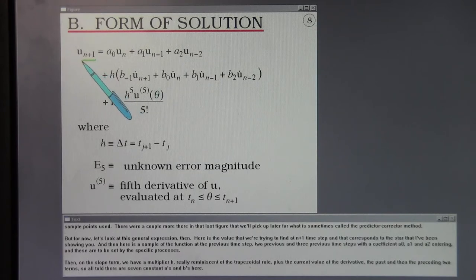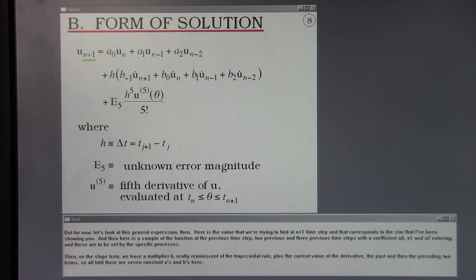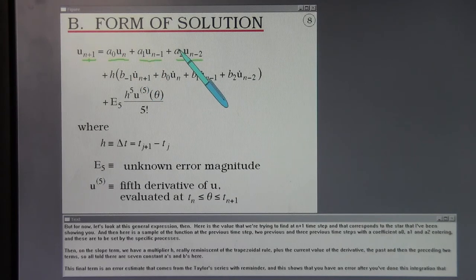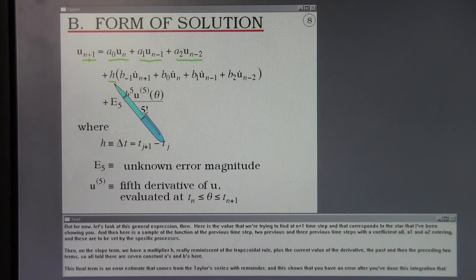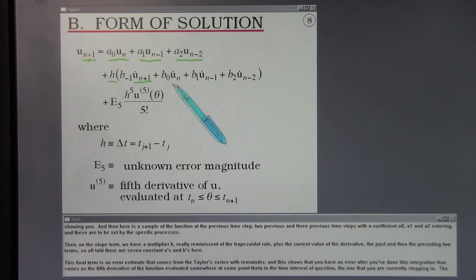Here is the value that we're trying to find at the n plus first time step, and that corresponds to the star that I've been showing you. And then here is a sample of the function at the previous time step, two previous, and three previous time steps, with a coefficient a0, a1, a2 entering, and these are to be set by the specific processes. Then on the slope term we have the multiplier h, plus the current value of the derivative, the past, and then the preceding two terms. So all told there are seven constants a's and b's here.